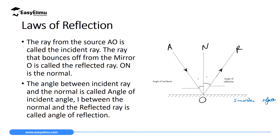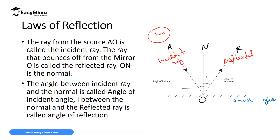Before we proceed to the laws of reflection, it's important for us to note how light behaves when it hits a smooth surface. If you have a ray of light from point A to O, this ray of light which comes from the source — let's say the sun — is called the incident ray. When it hits a smooth surface it will bounce off, and the ray which bounces off is called the reflected ray.